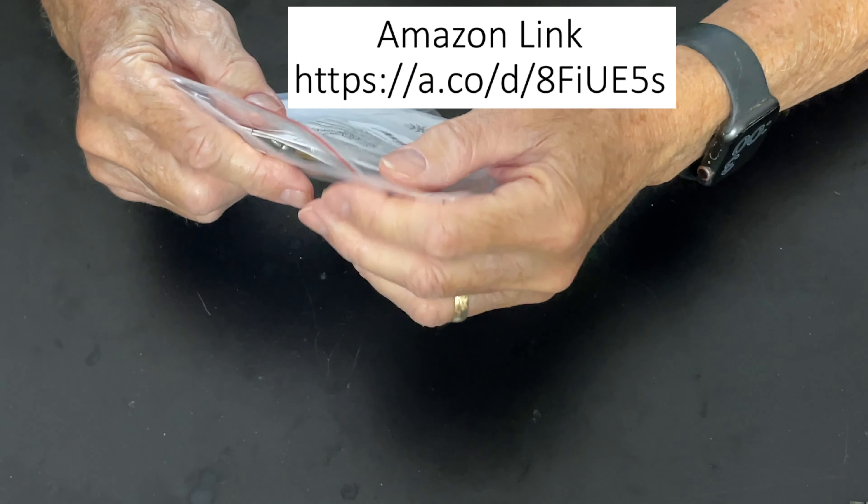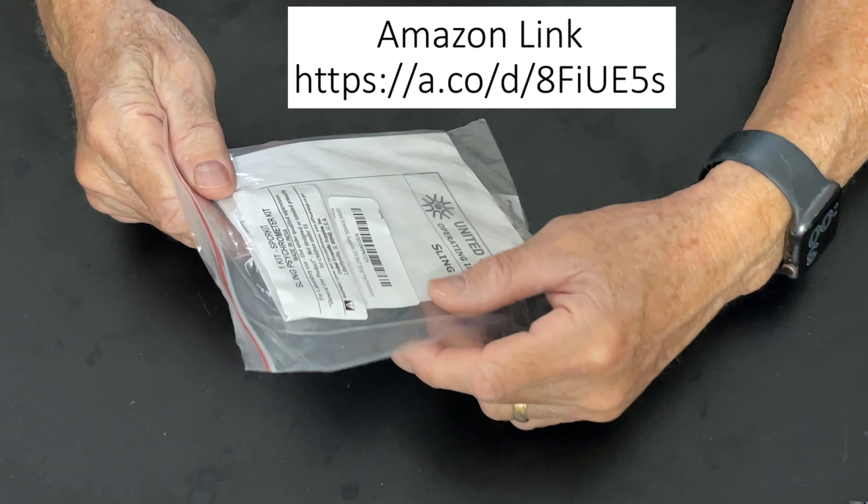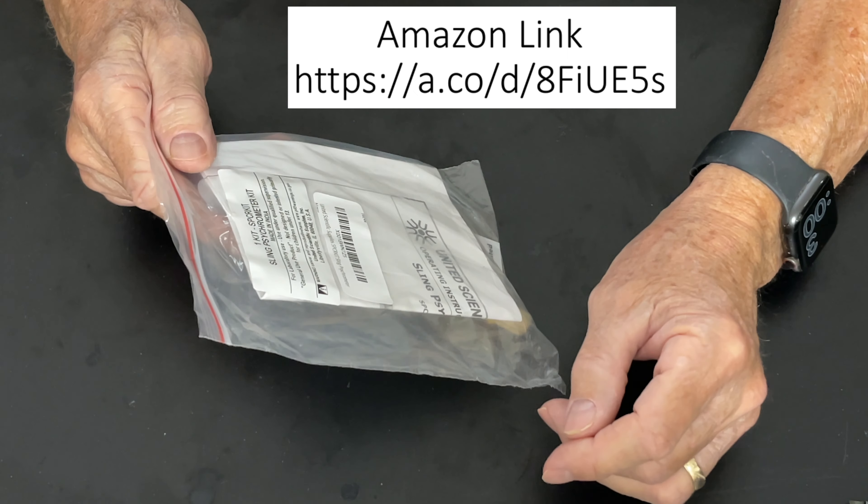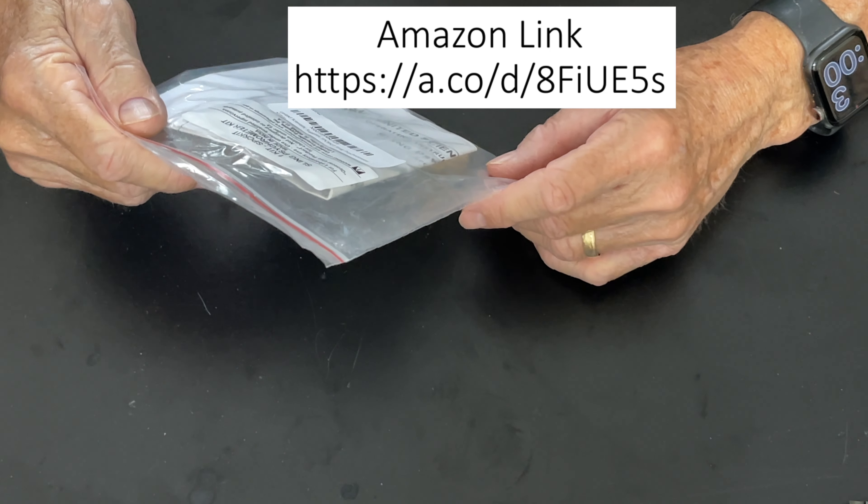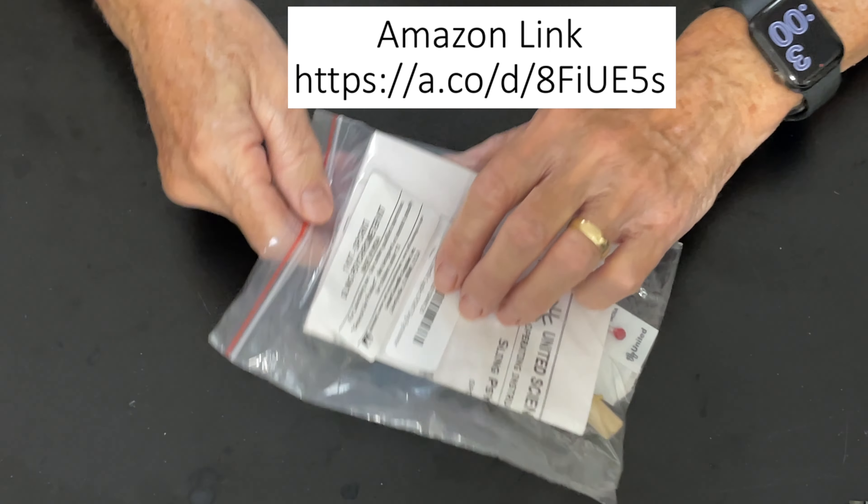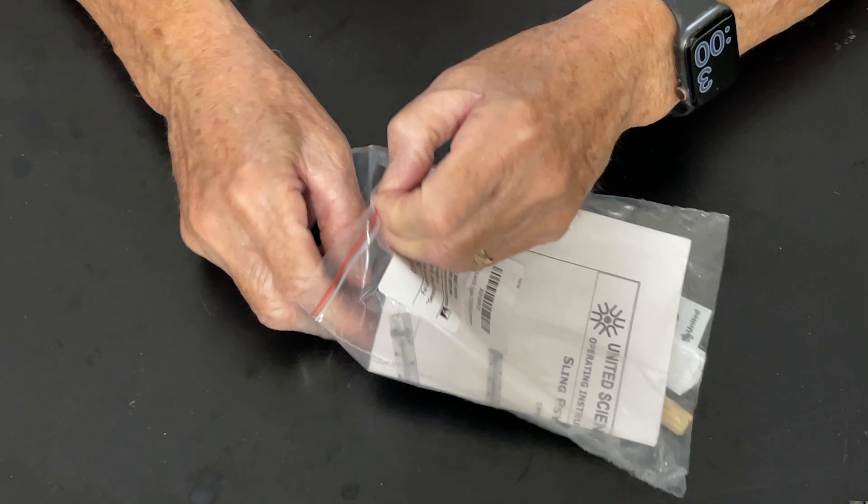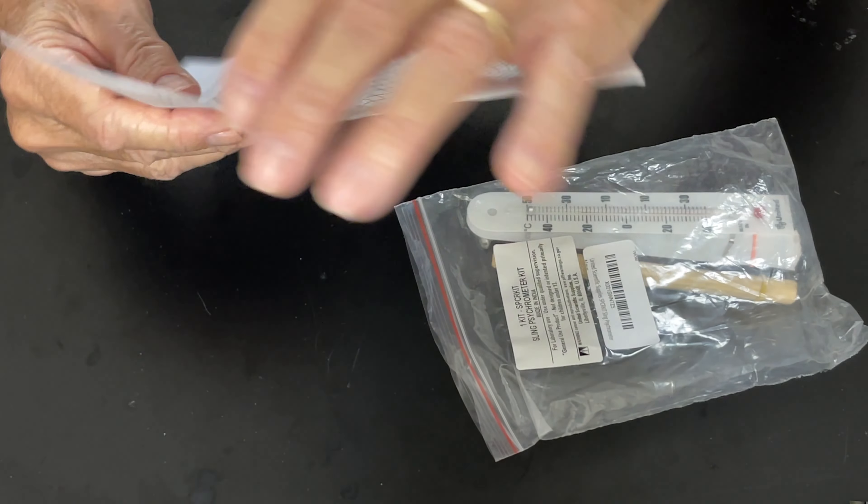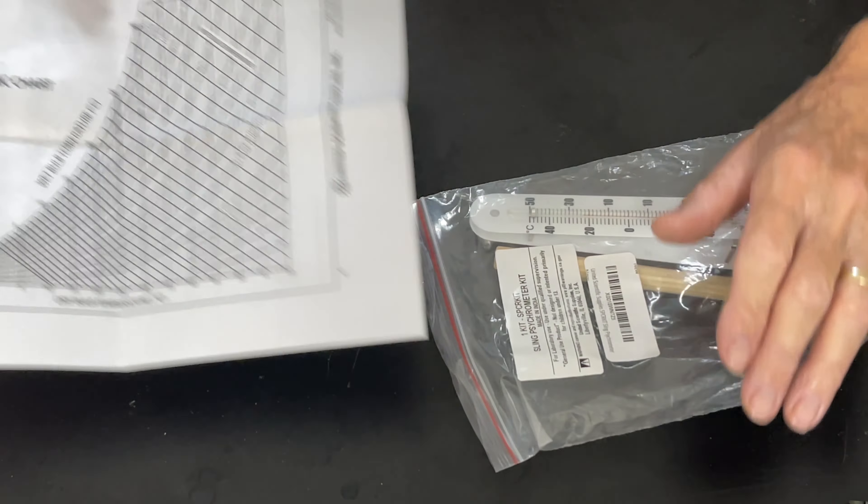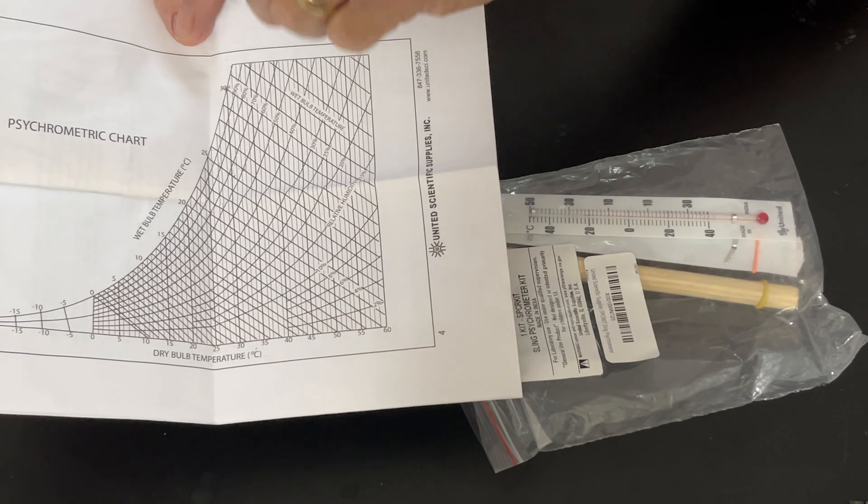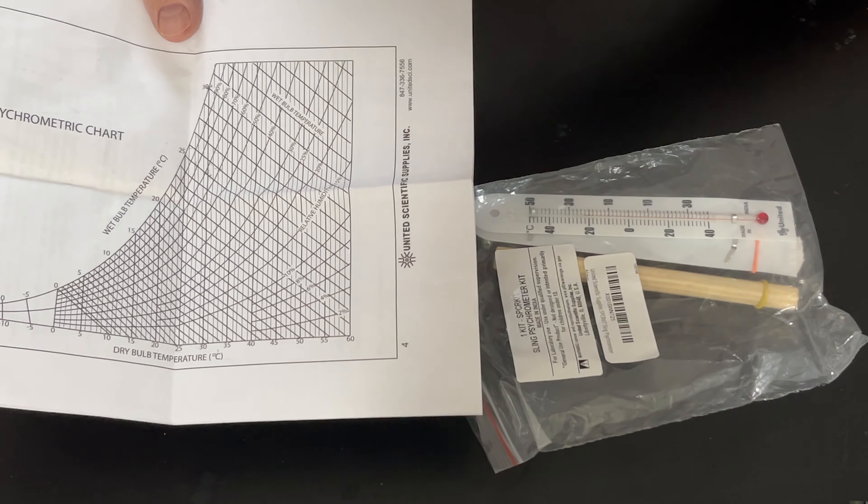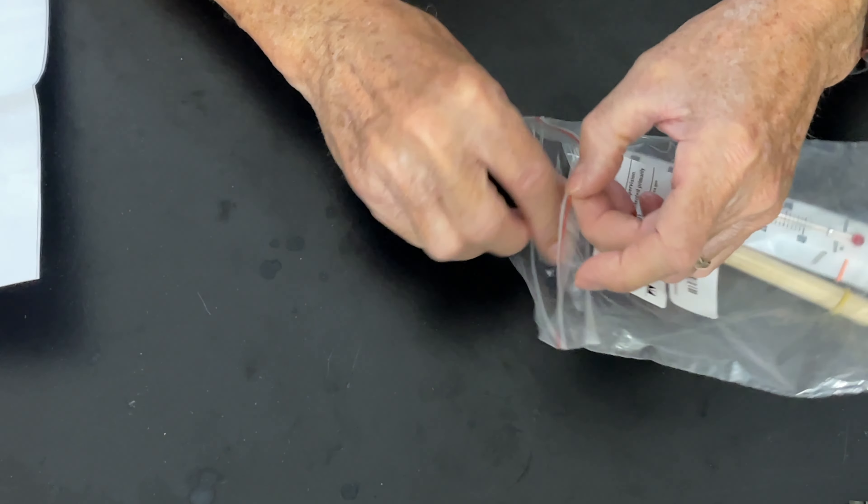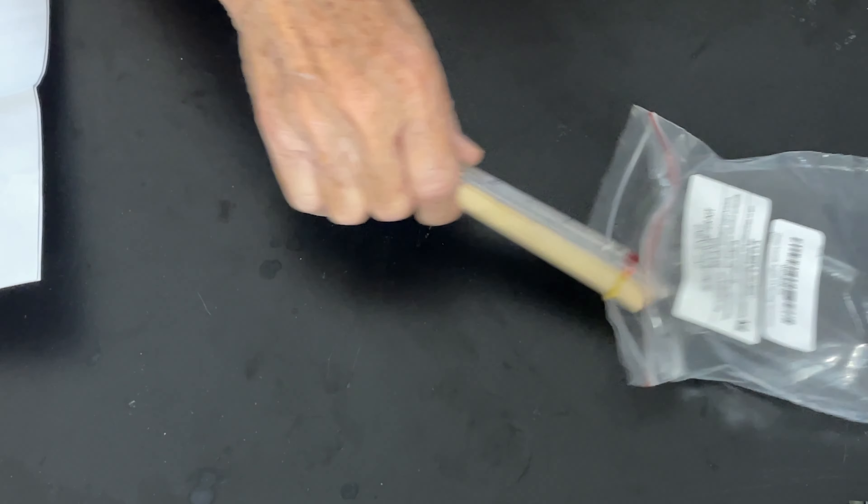I ordered this sling psychrometer kit off Amazon. The price was $14.37, and with tax and free shipping because it's Prime, $15.38 from United Scientific Supplies. What you get in the kit is your directions on how to assemble it and how to use it, and on the back side is a psychrometric chart that relates dry bulb temperature to wet bulb and what the relative humidity is when you've got those two numbers.